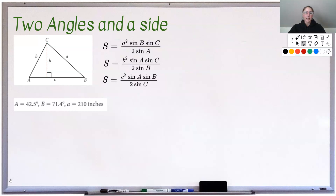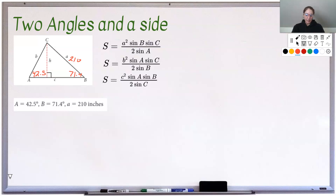So if you know two angles and a side — angle-angle-side — any one of these formulas will work depending on what angles and sides you have. In our example, we have angle A = 42.5°, angle B = 71.4°, and side a = 210. Now all of my formulas use angles B, C, and A, so I need to know all angles. If I know two angles, I can find the third: 180 minus 42.5 minus 71.4 gives me angle C = 66.1°.